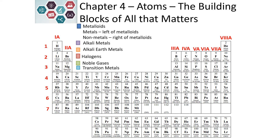On the periodic table, we typically number the group numbers in Roman numerals and the periods with numbers one through seven. Our metalloids are found on a diagonal line between our metals and our non-metals — it starts at boron and stair steps down the periodic table.